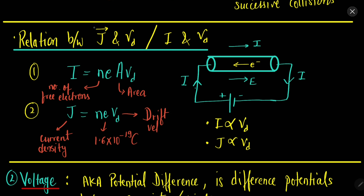The relation between current and drift velocity is: I = nEAV_D, where N is the number of electrons, E is the charge of the electron, A is the cross-sectional area, and V_D is the drift velocity. Since current density J equals current upon area, we get J = nEV_D. So current is directly proportional to drift velocity and current density is directly proportional to drift velocity. More the drift velocity, more the current, because current is the flow of electrons in a particular direction.